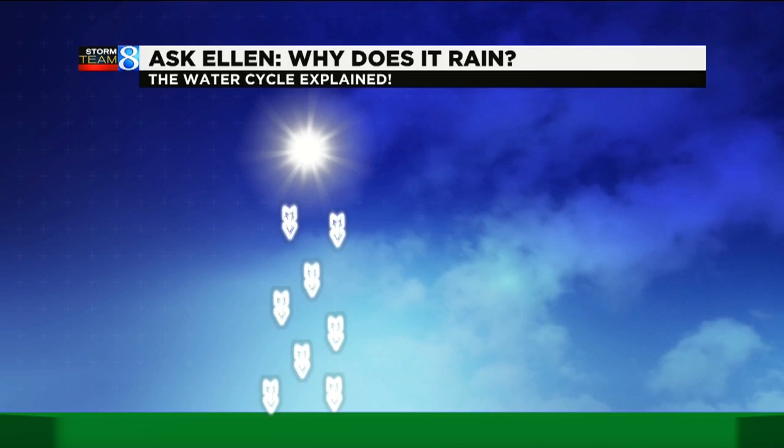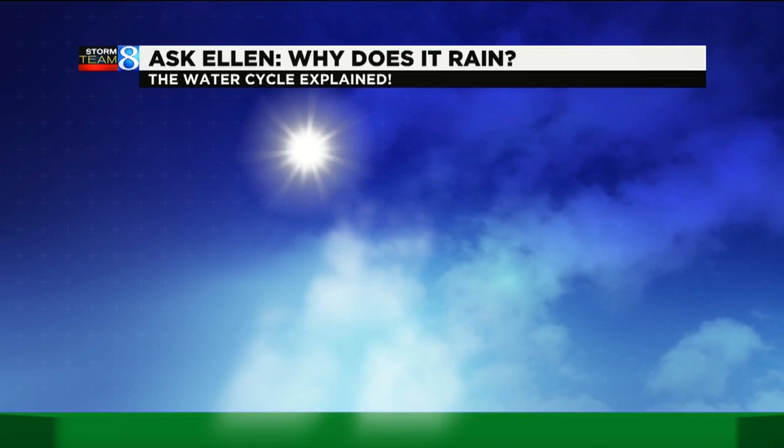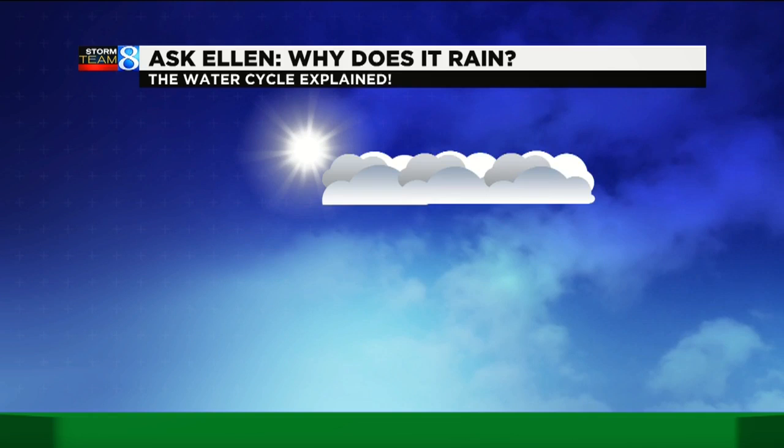So first, we start off with the water cycle with the sunshine. The sun heats the ground and as the ground gets warmer and warmer, invisible water vapor starts rising from the ground. We don't see this, but it's happening. As more of the water vapor gets high in the sky, it gets cold and it turns into clouds, and when the clouds get heavy enough, it rains. So it starts with the sunshine, turns into evaporation and condensation and precipitation.